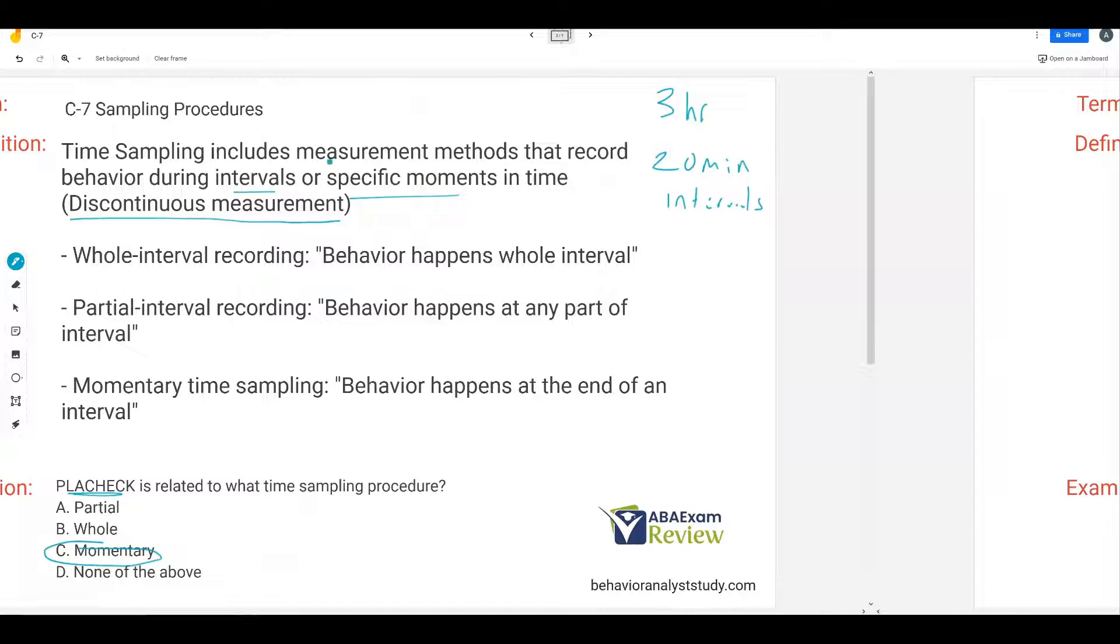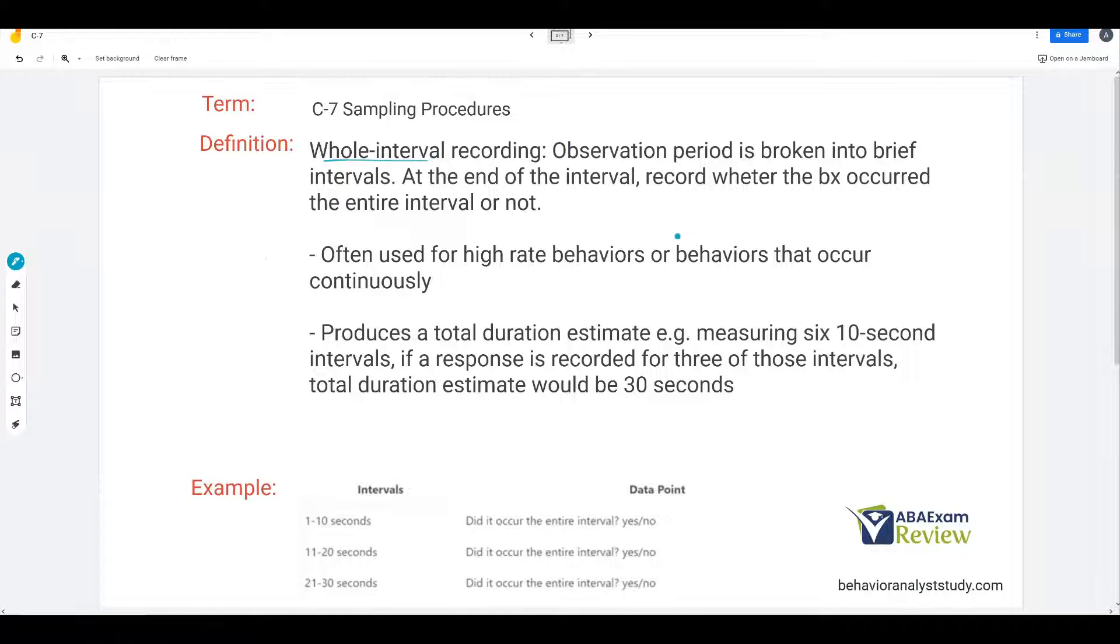Let's start with whole interval recording. I think the easiest to understand. Your observation period is broken into brief intervals. At the end of the interval, record whether the behavior occurred the entire interval or not. In other words, let's say I'm taking data for one minute. I have six intervals, 10 seconds each. In order for it to count as a response, that behavior has to occur the entire 10 seconds.